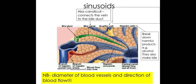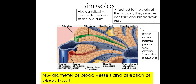Kupffer cells are attached to the walls of the sinusoid; they remove bacteria and break down red blood cells. Hepatic cells break down products found in the blood brought from the hepatic portal vein from the digestive tract, such as alcohol, and they also make bile. They are also involved in aerobic respiration to generate ATP.